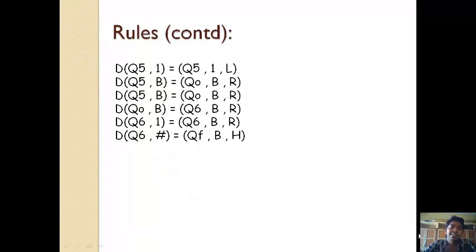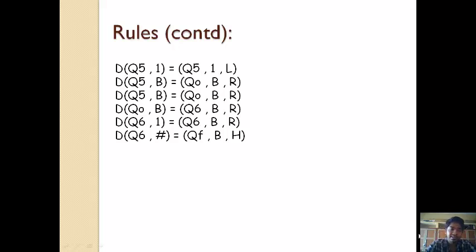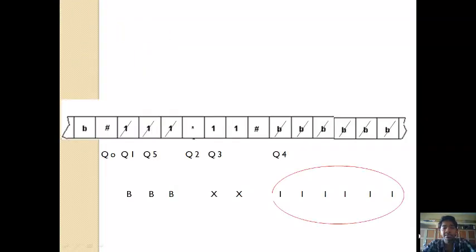Basically what we are doing is copying the multiplicand the multiplier number of times. We are adding up 2 three times, so 2 plus 2 plus 2 equals 6. That's our basic idea. Once all the copying is done, we change to the final state and halt. All the ones on the multiplier side become blank, which marks that all processing is complete, as shown here. All the ones have been crossed out and we have our answer on the right side of the tape, which is 6. Thank you.